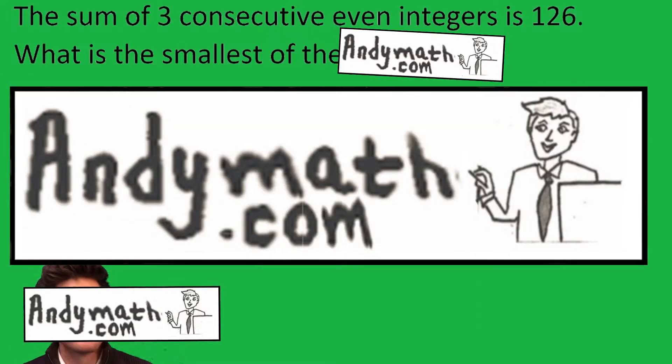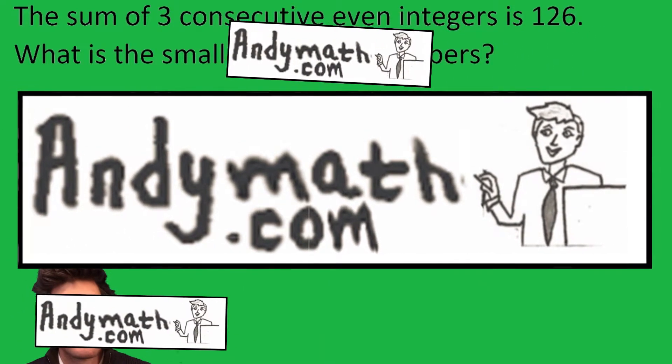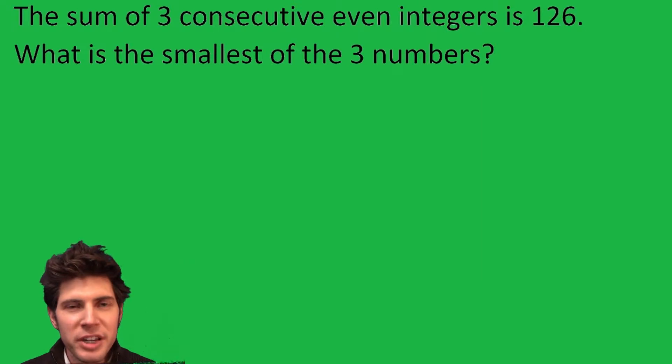Hey guys, welcome to this video. The sum of three consecutive even integers is 126. What is the smallest of the three numbers? So the three consecutive even integers—first we have our smallest integer, we'll call it x.